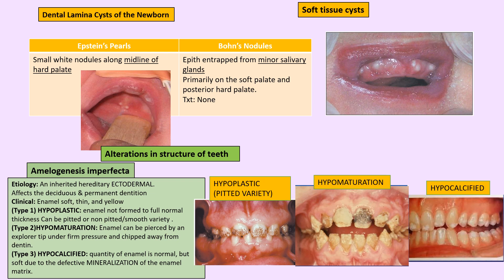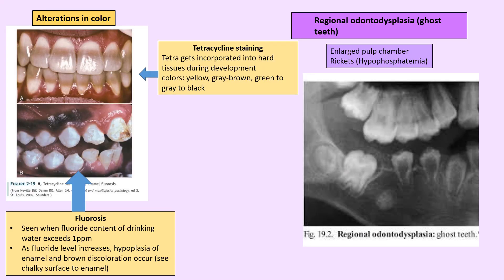In hypoplastic amelogenesis imperfecta, which can be pitted or smooth (non-pitted variety), the quantity of enamel is affected. In hypomaturation and hypocalcified types, the quality of enamel is affected — you have soft enamel that chips easily. Hypomaturation also produces capped incisal edges.